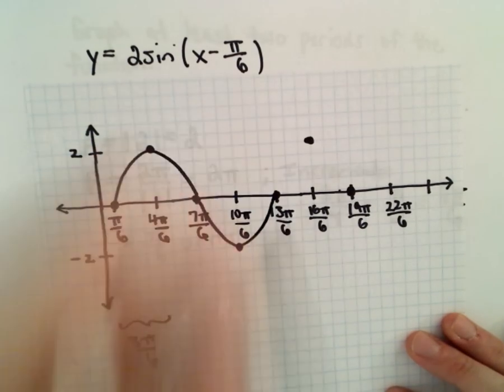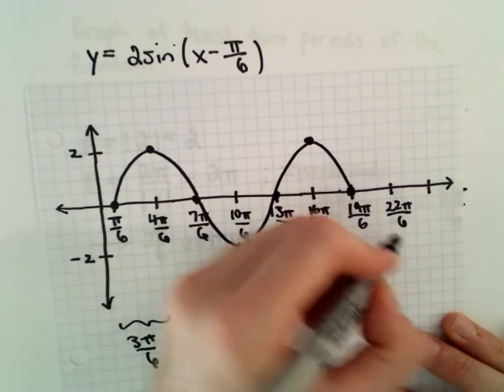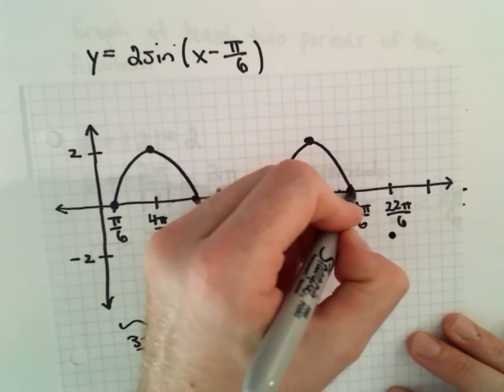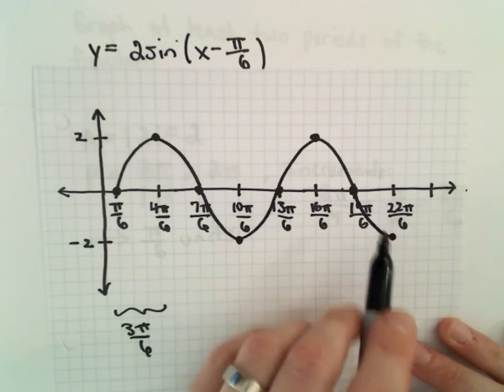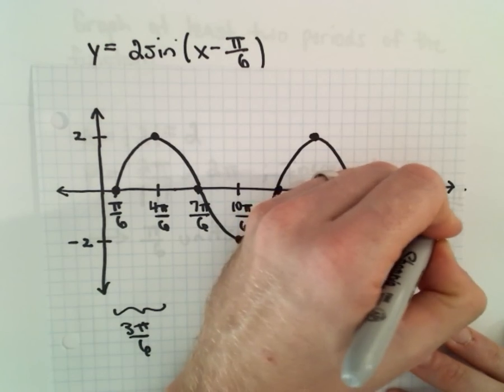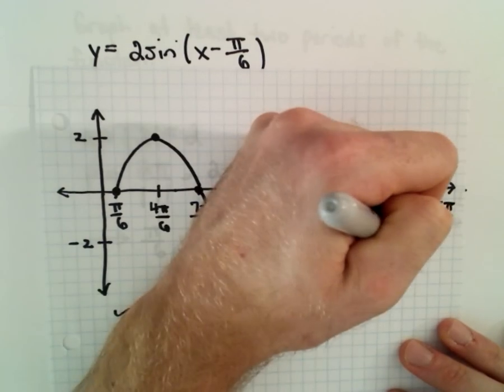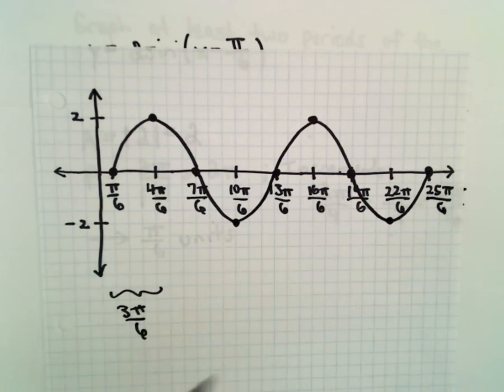So there's one period. Nope, actually, I'm totally wrong there. We need to go a little bit more. So at 22 pi over 6, it'll bottom out at negative 2. We need to go over another 3 pi over 6, which will give us 25 pi over 6. That'll put us back at 0, and now we've got 2 periods of our function.